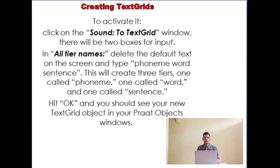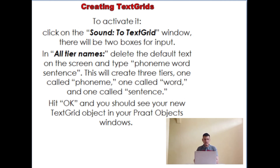The last feature is creating text grids. There are text grid objects that you can display in the program. To activate it, you need to click on the sound-to-text grid window. There will be two boxes for input. In the tier names button, delete the default text on the screen and type 'phoneme word sentence'. This will create three tiers — one called phoneme, one called word, and one called sentence. Then hit the OK button, and you should see your new text grid object in your Praat window.